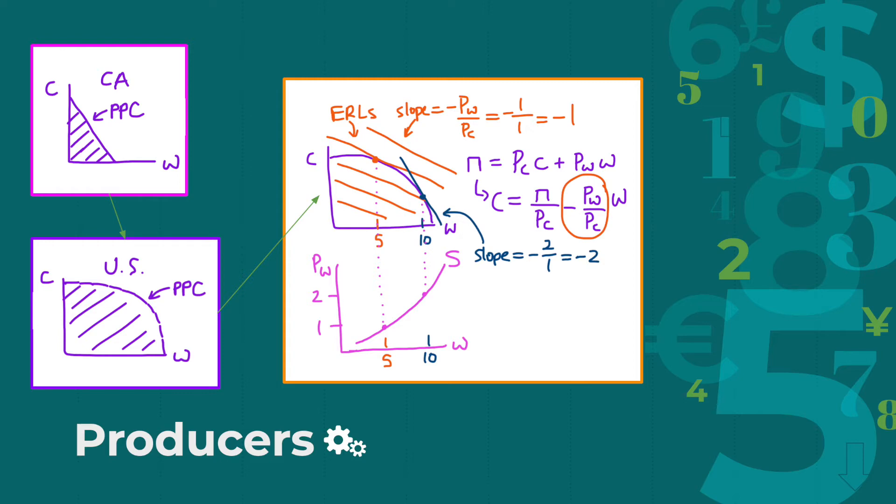Now, let's say that the price of wheat increases to $2, and the price of corn stays at $1. Now, the ERL slope is negative 2, and the U.S. is now producing 10 units of wheat. So, the U.S. will produce at a point farther down the PPC, tangent to the new ERL.